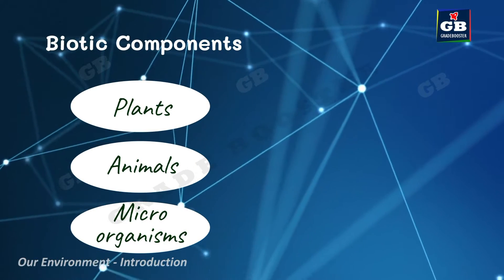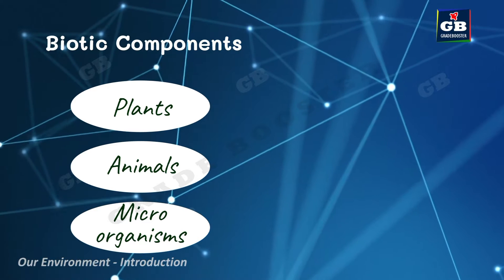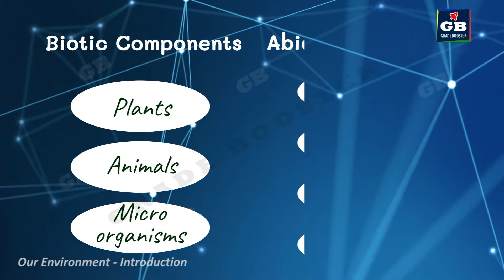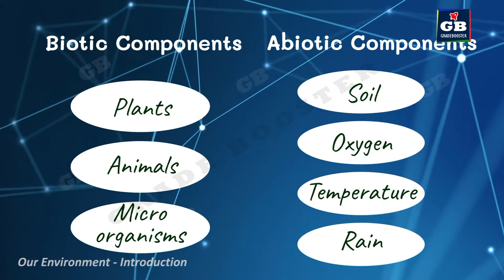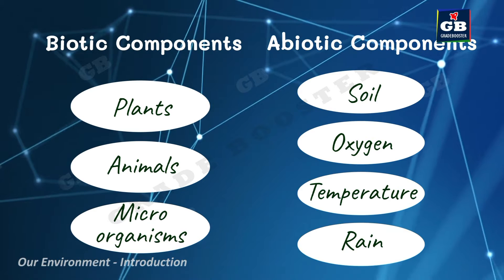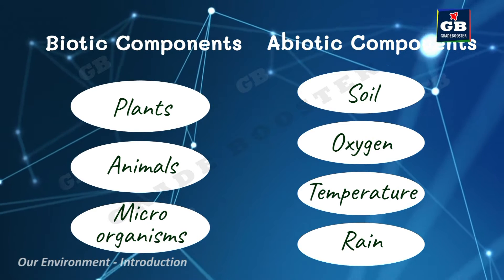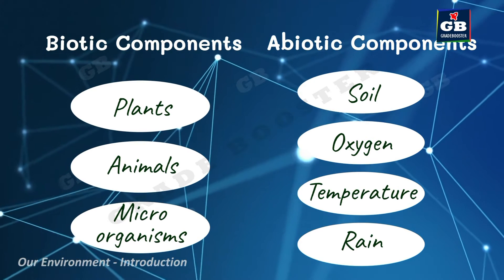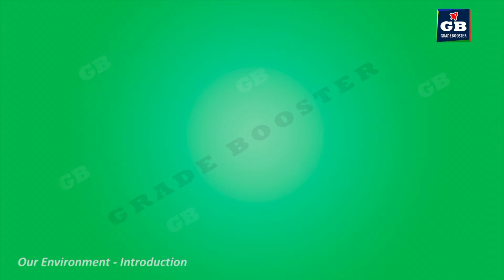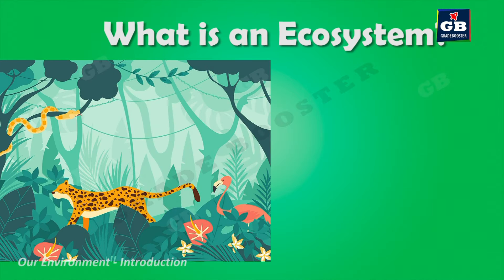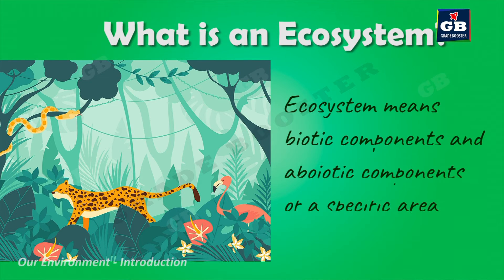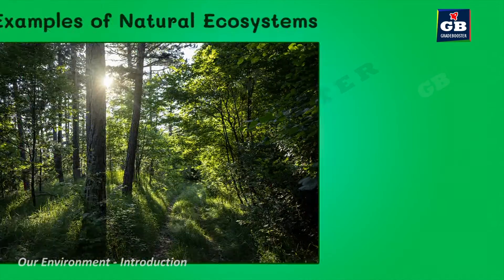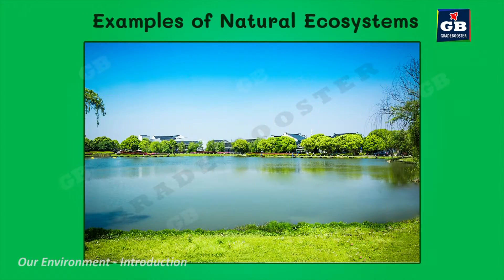The non-living components are called abiotic components. The interacting living components and non-living components of a particular area form an ecosystem. Ecosystem means biotic components and the abiotic components of a specific area.